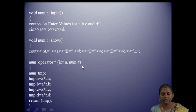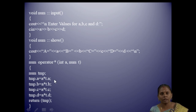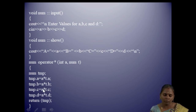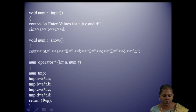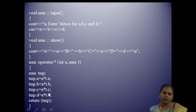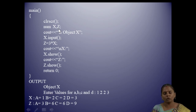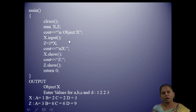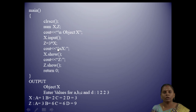The operator* function for multiplication using friend function: num operator*(int a, num t). We declare num temp, then temp.a = a * t.a, temp.b = a * t.b, temp.c = a * t.c, temp.d = a * t.d, and return temp. In main, we declare two objects num x, z. We call x.inputof() to get values, then z = 3 * x to multiply all variables by the constant 3.